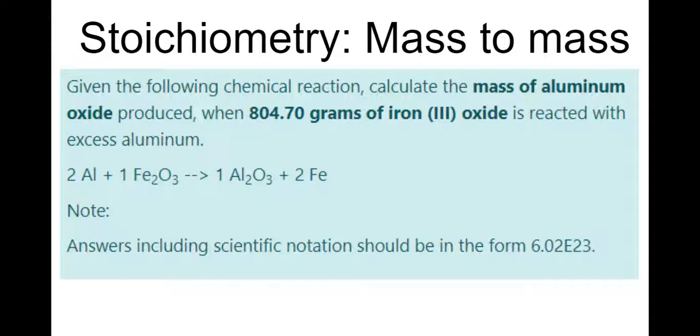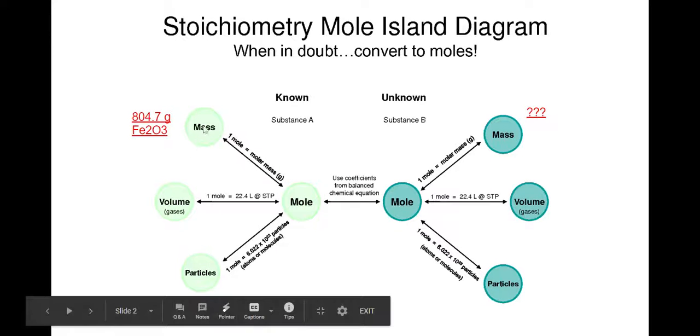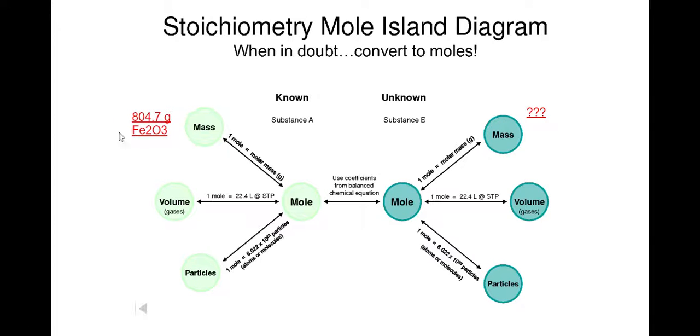So let me show you a tool that I'm going to give you called a mole island diagram. And it's just basically, you can use this tool to help you organize your stoichiometry, but this is how you'll do it. First, you figure out what your known is. So in this case, we were given a mass of iron III oxide. So I just note, I'm going to start right here. 804.70 grams Fe2O3.